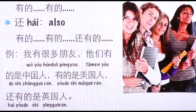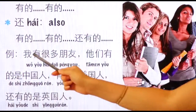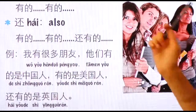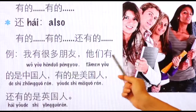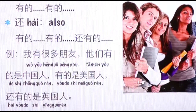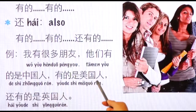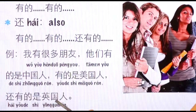我有很多朋友 — I have many friends. 他们有的是中国人 — 他们有的是 means 'some of them.' In Chinese and English, the word order is often opposite. 有的是美国人 — some are American. 还有的是英国人 — also, some are 英国人.